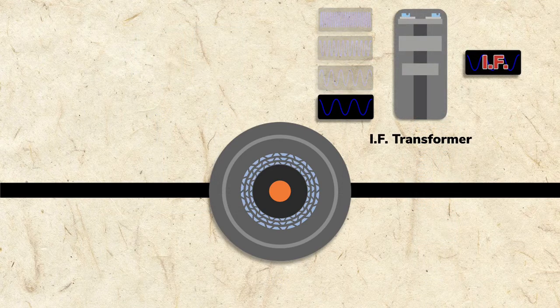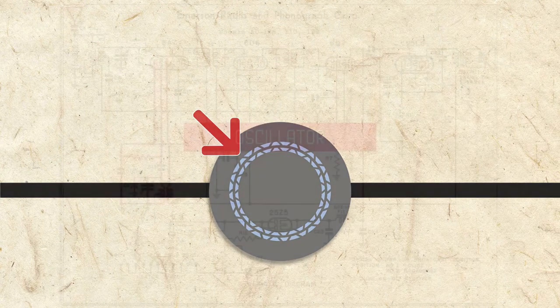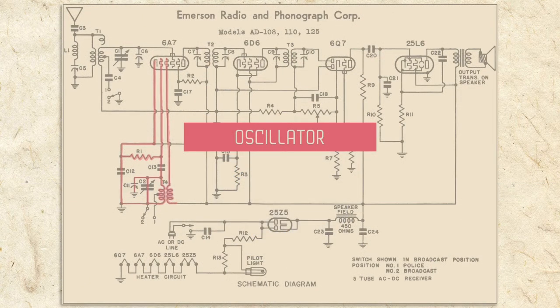Filtering the unwanted frequencies from the IF is the job of the IF transformers, which I'll discuss in a later section. But first, I'll explain grids 4 and 5, and in the next section, how the oscillator works.